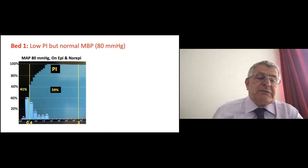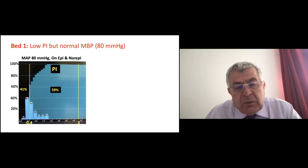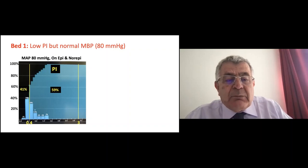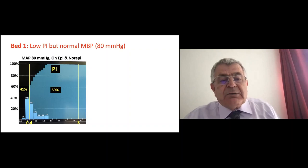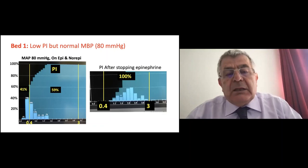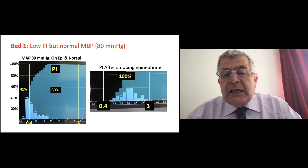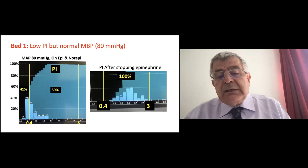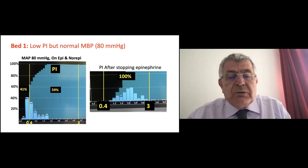I decided not to act based on the pulsatility index alone, as I didn't want to interfere with a process I didn't fully understand. We continued weaning normally off epinephrine. A few hours later, when epinephrine was off, the histogram showed 100% within target. So when treating shock, it's important not only to classify it as distributive or vasoconstrictive, but also to observe the effect of your medications on the perfusion index.